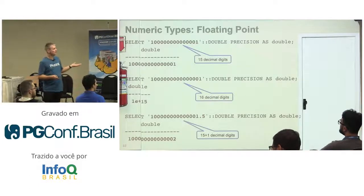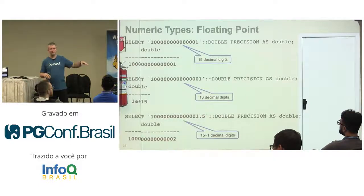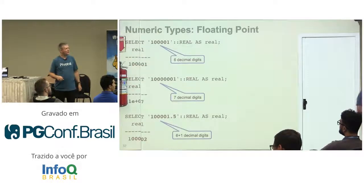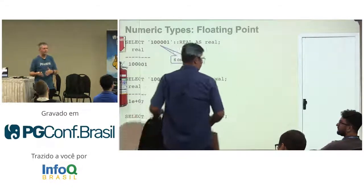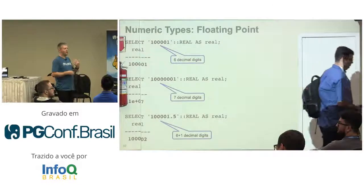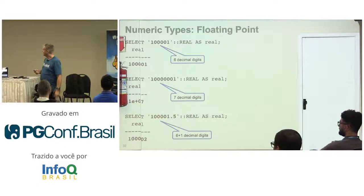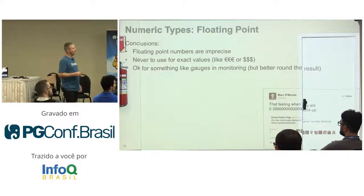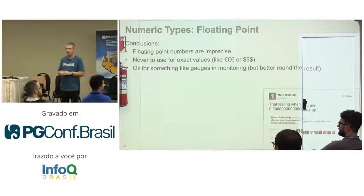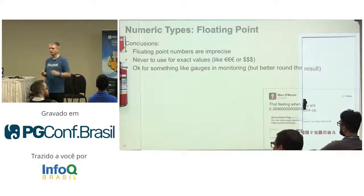So where is floating point useful? If you're talking about IoT — Internet of Things — and you just want to store numbers like what's the temperature on my mainboard or what's the temperature outside, you don't exactly care if it's 22.1 or 22.2 degrees. But if you want to store something like how much money you have in your bank account, you probably do not want to round that number. For exact values, we can use numeric, which has a precision of up to 1,000 digits.